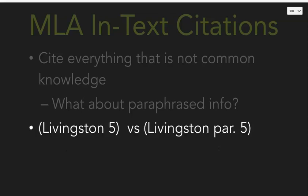So if I see "Livingston 5," I should be able to go to your works cited page, find L because it's in alphabetical order, and see the source from there.